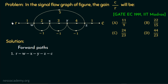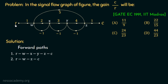Moreover, if we start from node R, move to node W via a branch, then take a branch to move towards node Z, and then move towards node C, this will be the second forward path: R, W, Z, C. So we have two forward paths in this signal flow graph.